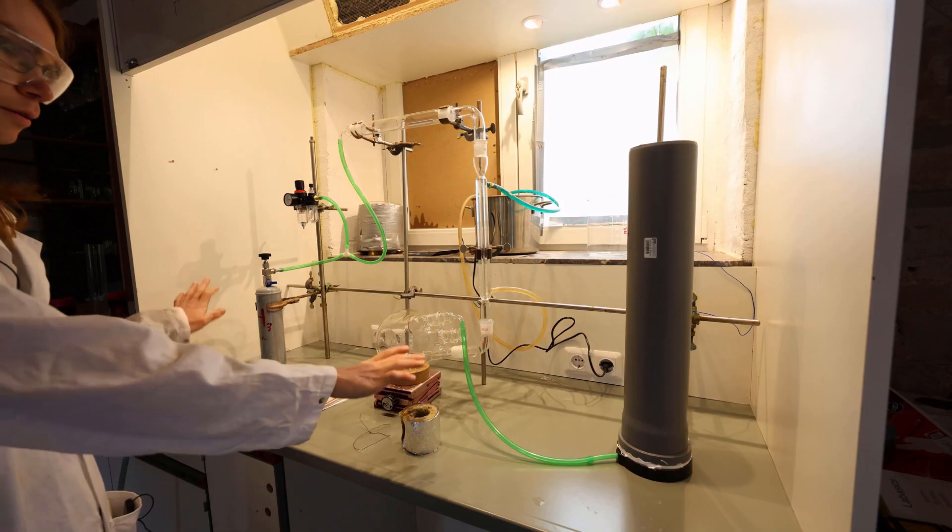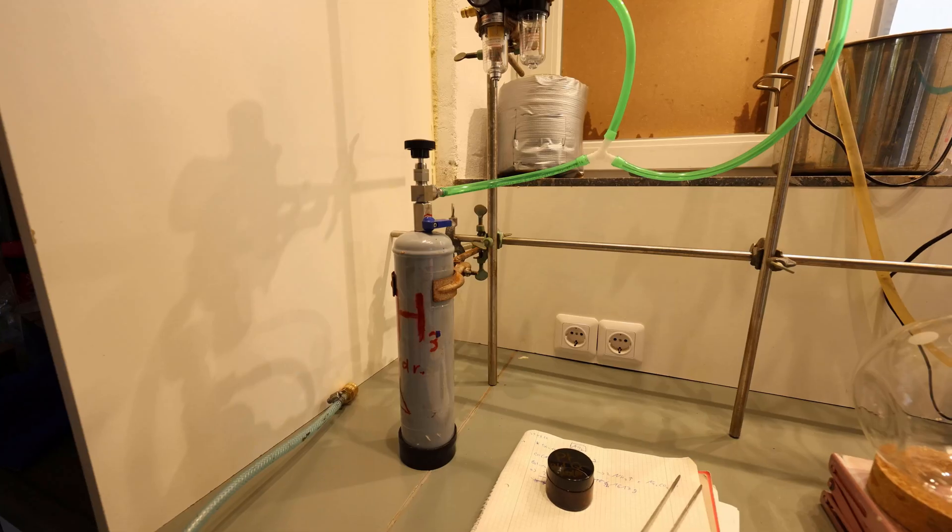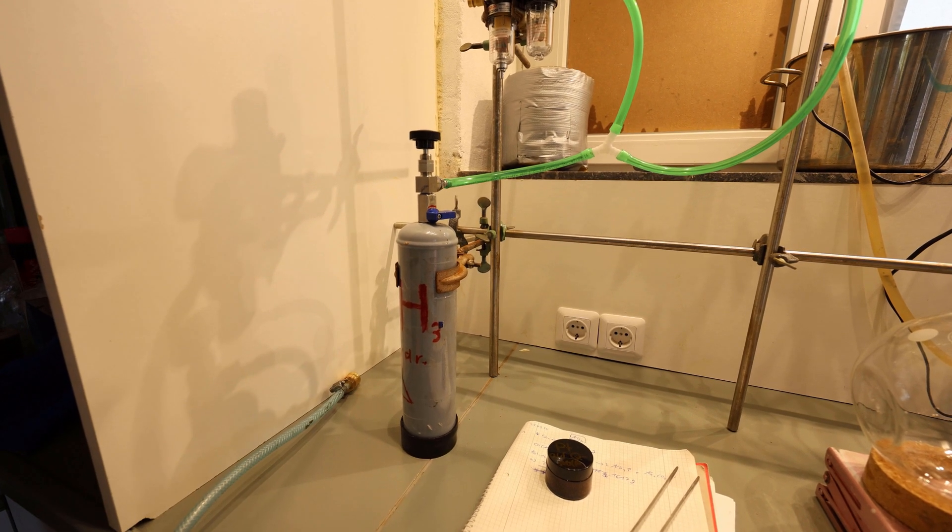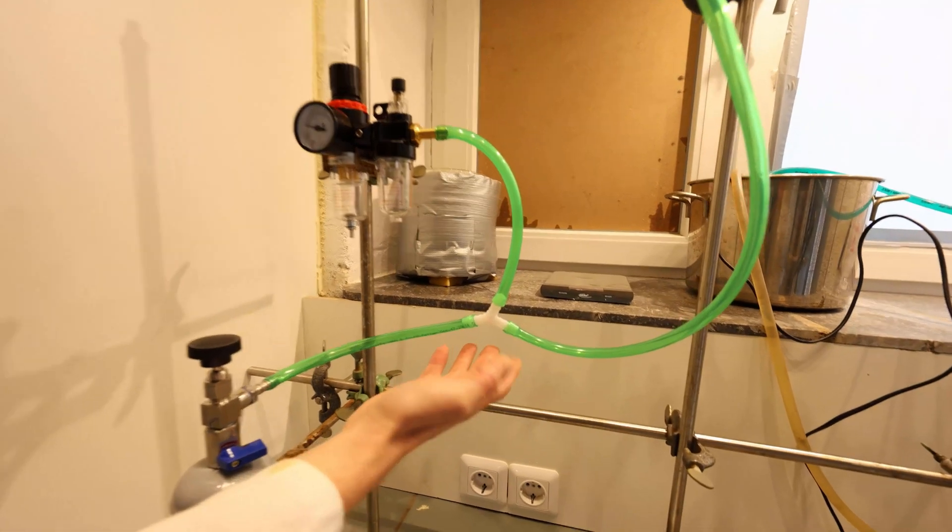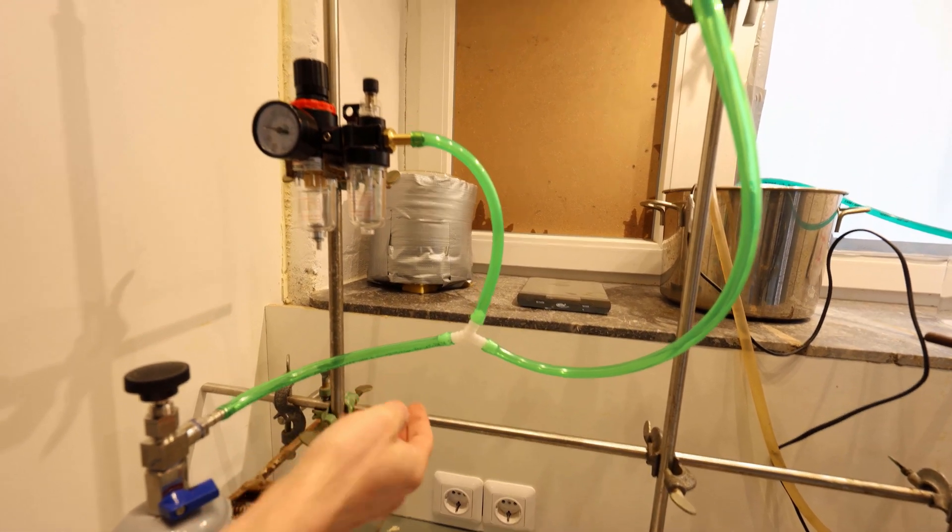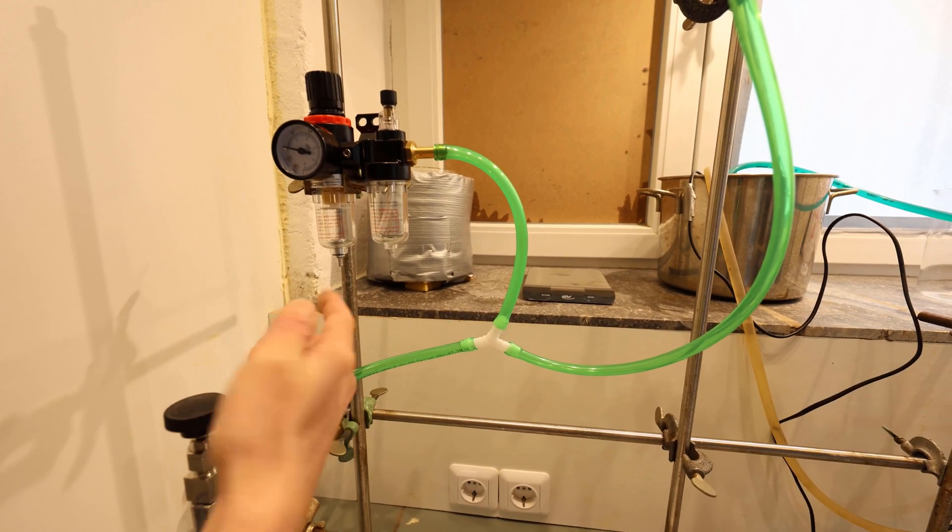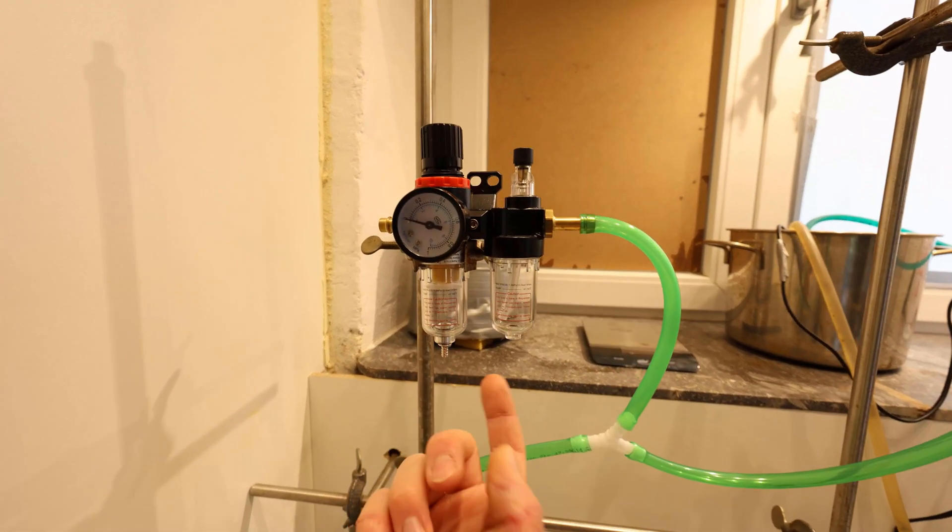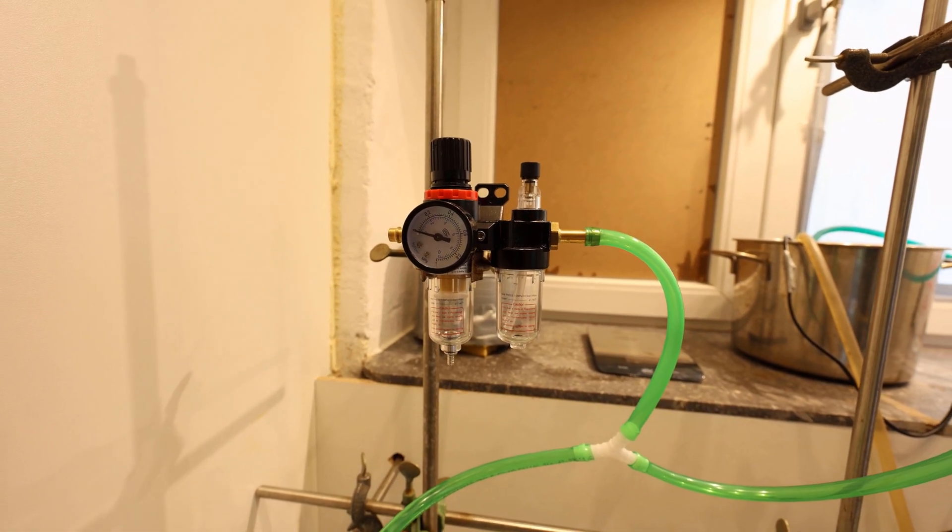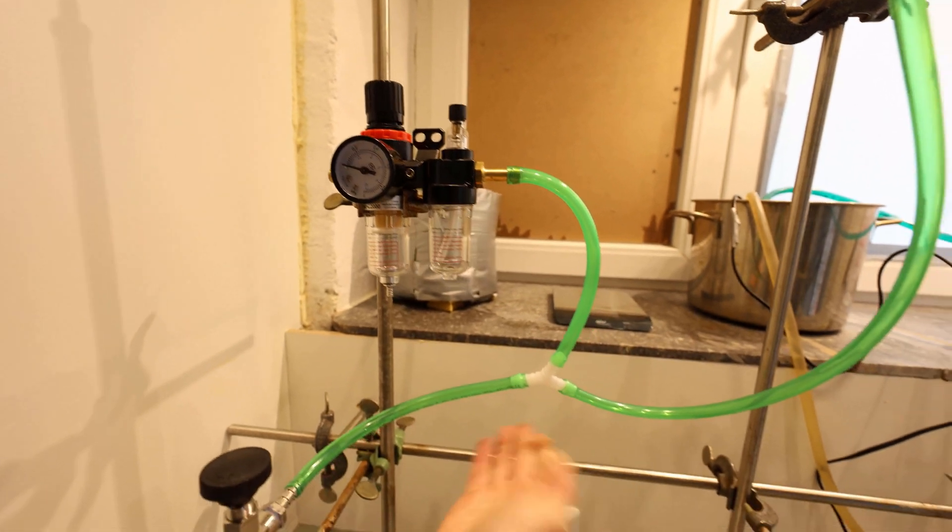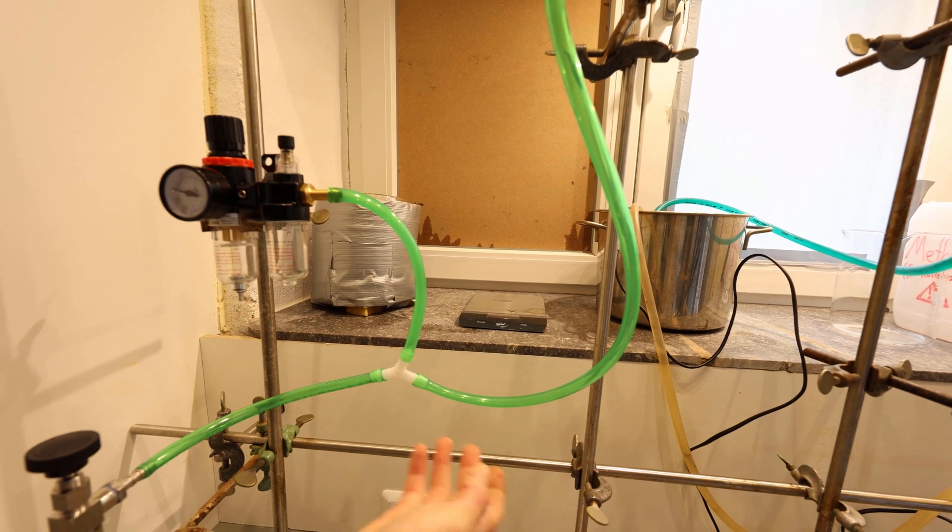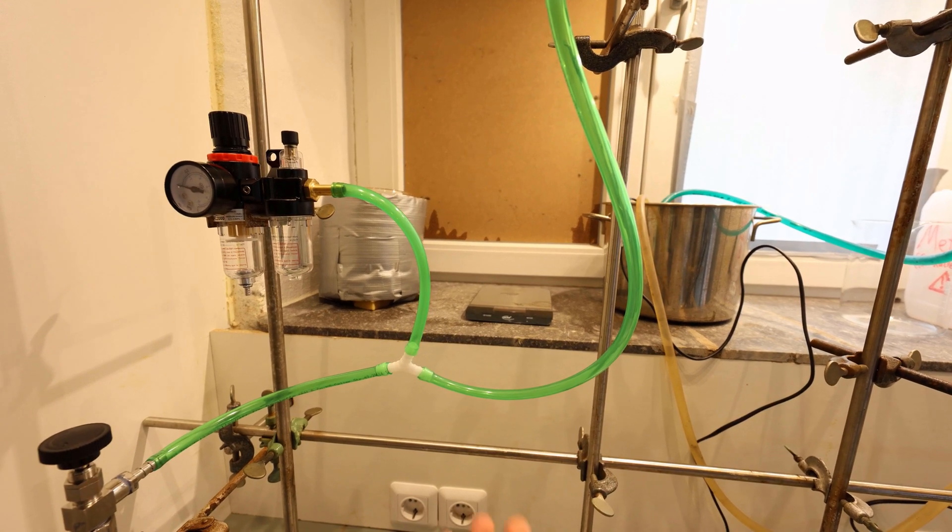All right, this is now the setup mostly assembled. We have here the ammonia bottle from last video and we will feed it in here. Here's a T-piece or Y-piece with three connections. Up here we have a pressure regulator and we're going to attach a compressor here to get some air in, and the air will mix here with the ammonia so we have a pretty good ratio of these two to react together.